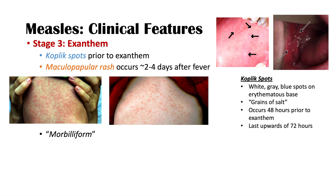The prefix "morbili" comes from the Latin "morbis," meaning disease — you can think of morbidity, mortality. "Form" means what it looks like or its characteristic. So morbilliform essentially means disease-like in character. Just recognize that when we use the word morbilliform, we're describing a measles rash.